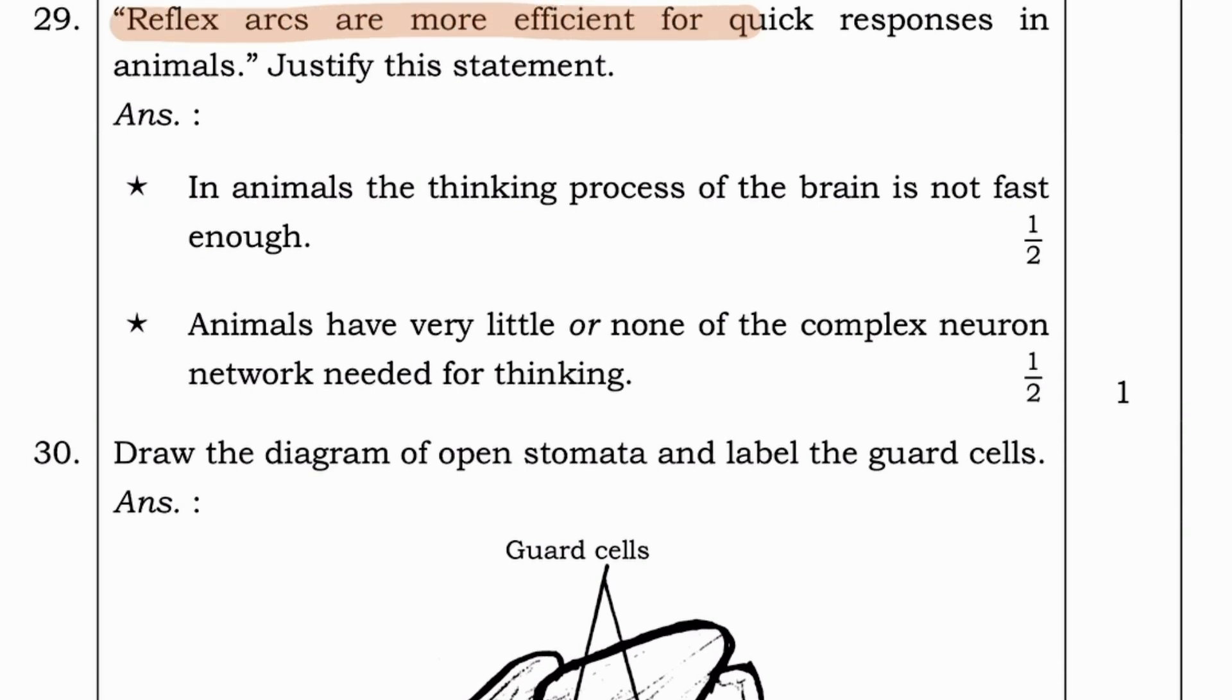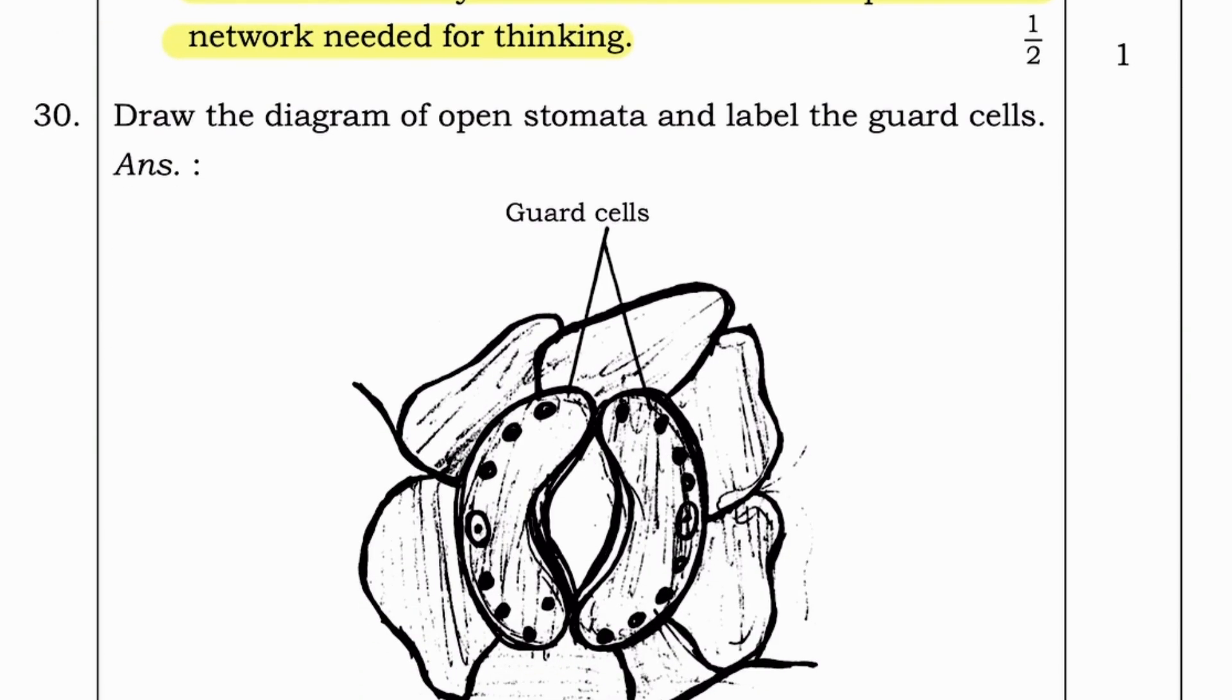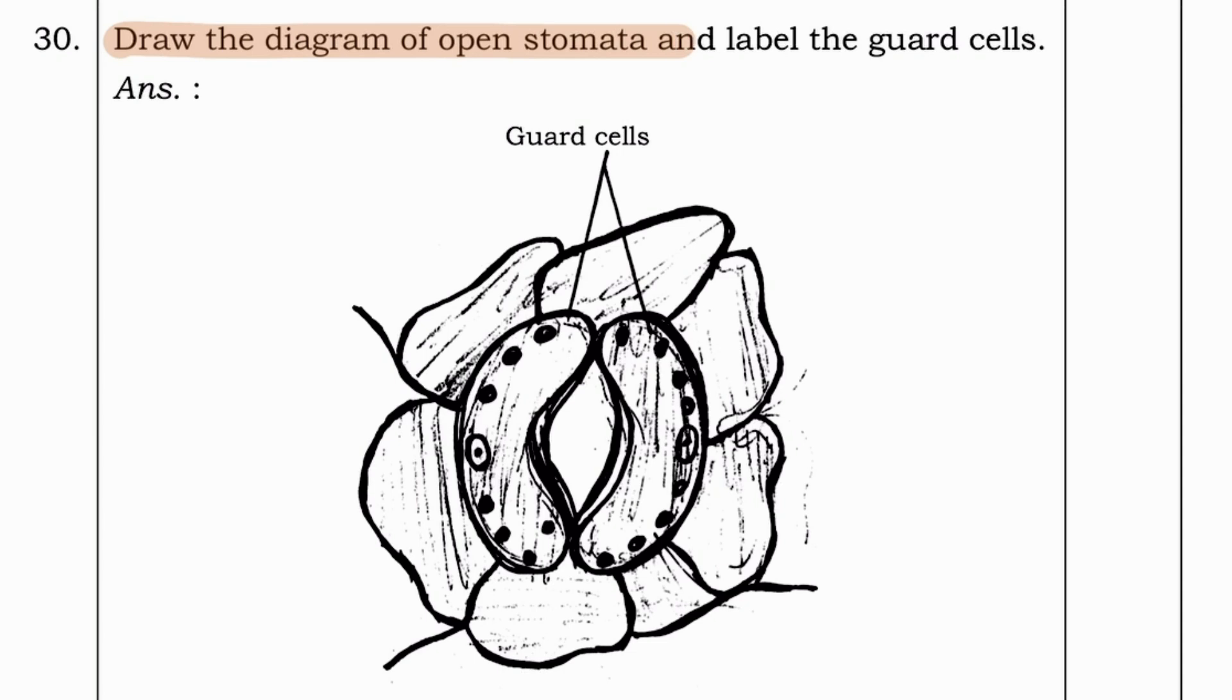Next question. Reflex arcs are more efficient for quick responses in animals. Justify the statement. Answer. In animals, the thinking process of brain is not fast enough. Animals have very little or none of the complex neurons network needed for thinking.